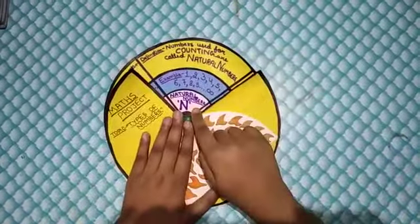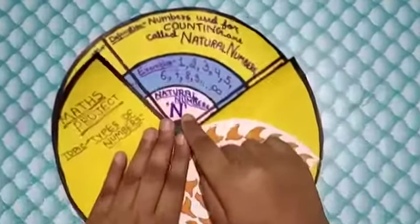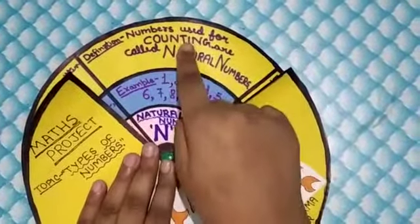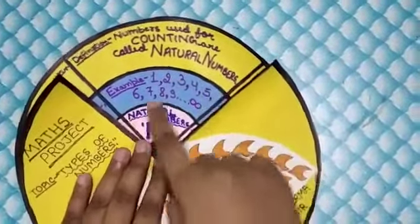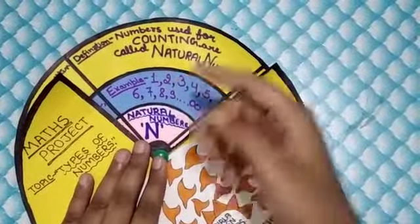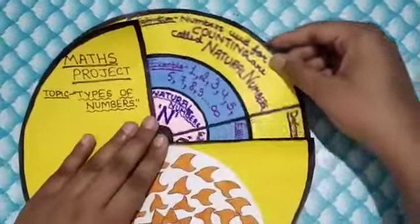First, natural numbers. Its sign is N and the numbers for counting are called natural numbers. Example: 1, 2, 3, 4, 5, 6 till infinity.